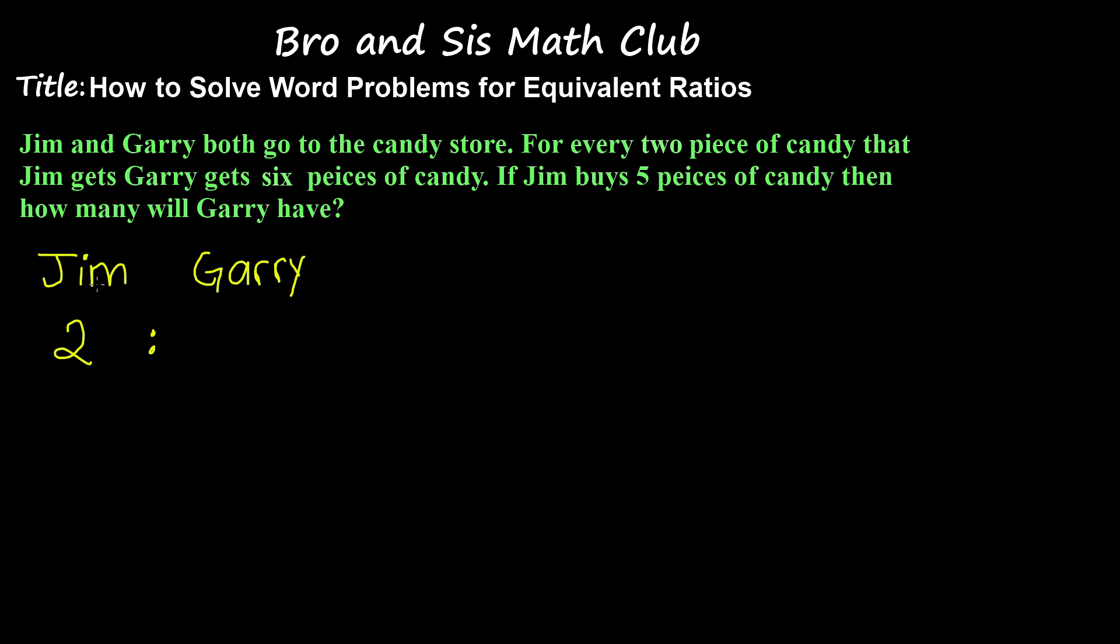So for every two pieces of candy that Jim gets, Gary gets six pieces of candy. So the ratio is going to be 2 to 6.